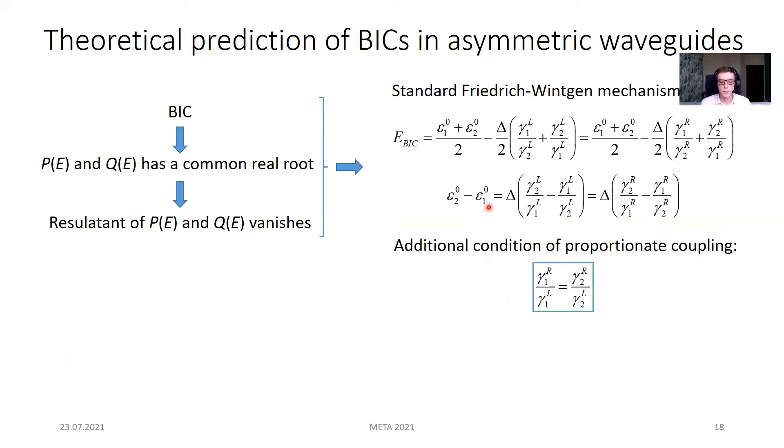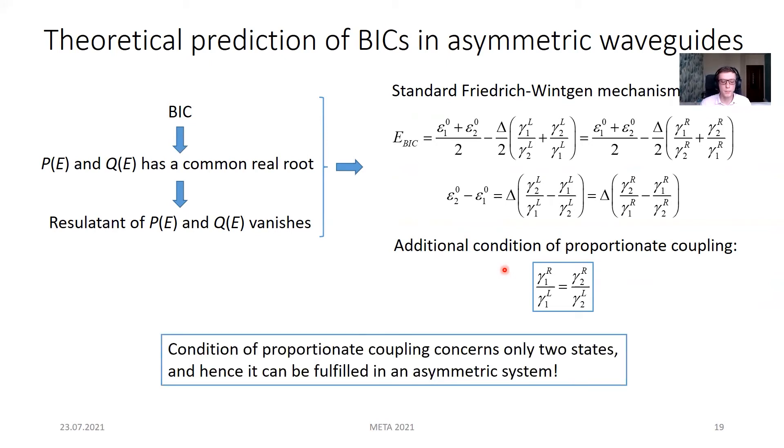However, at the same time, another condition naturally arises here, the condition of proportionate coupling. This condition is fulfilled automatically in specially symmetric systems, which are typically considered for BIC formation. Hence, as far as we are concerned, it was not recognized earlier. The important thing here is that this condition corresponds only to two states and hence it can be fulfilled in an asymmetric system as well, which I'll try to illustrate in the rest part of my speech.